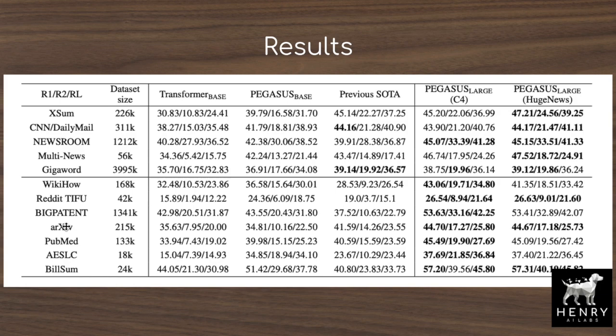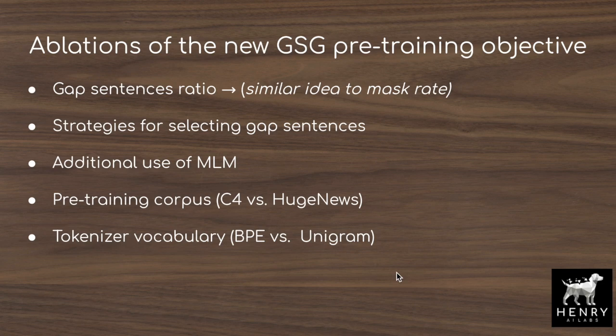With the new gap sentences generation pre-training objective, the authors explore many factors of variation. Similar to T5, they first test on a small-scale setting with about 200 million parameters and smaller batch sizes, then scale up to 560 million parameters in the Pegasus large model with much larger batch sizes. These smaller-scale experiments are used to ablate different factors of the new pre-training task.